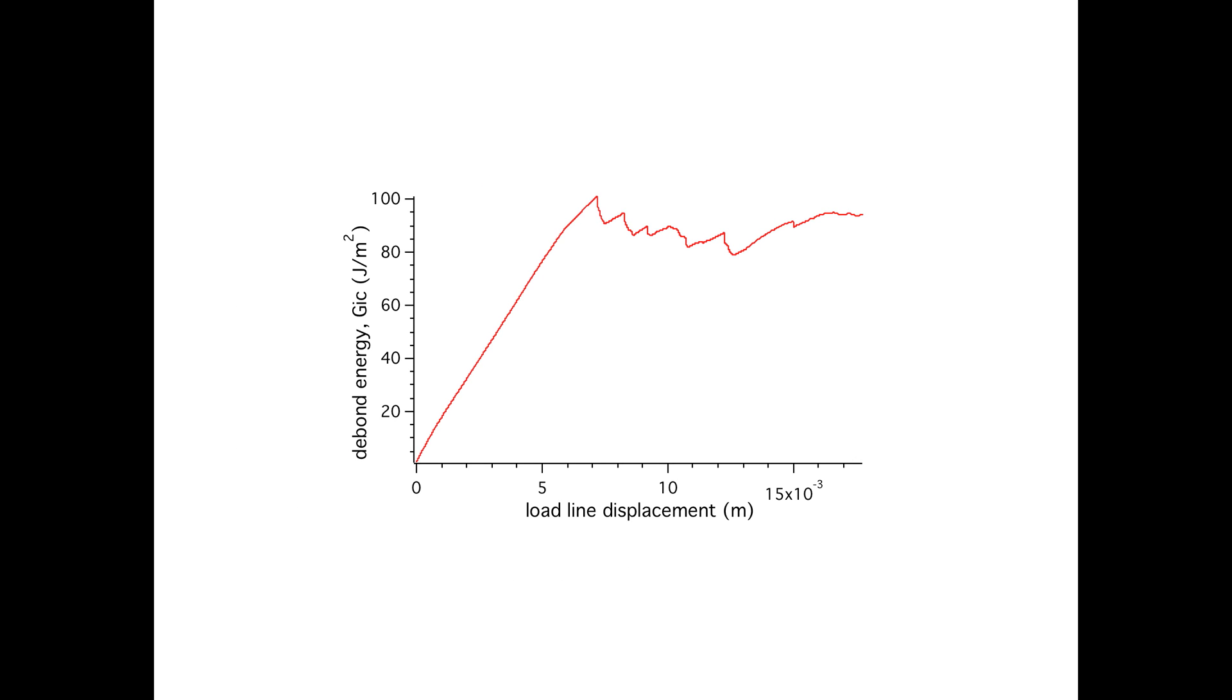I'd like to point out that every measurement might not result in a nice flat plateau load during debond propagation, and that's fine. It will just add to the uncertainty in the measurement, such as in this example. Here I would still consider all values following the load spike associated with the debond initiation for the adhesion calculation.